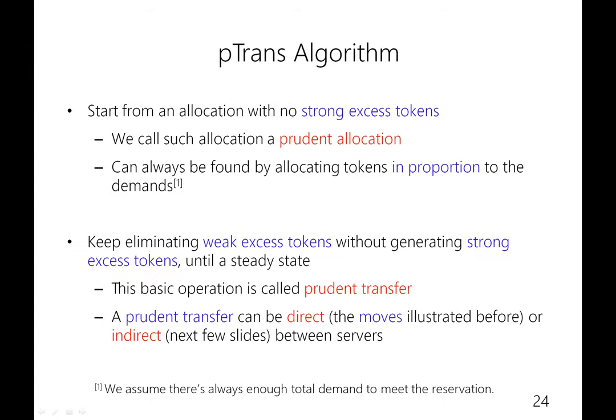Therefore, our P-Trans algorithm uses the following strategy: it starts from an allocation with no strong excess tokens, which we call a prudent allocation. A prudent allocation can always be found by allocating tokens in proportion to the demands. Then P-Trans keeps eliminating weak excess tokens without generating strong excess tokens until we reach a steady state. The basic operation is called a prudent transfer, which can be either direct, as illustrated before, or indirect between servers.